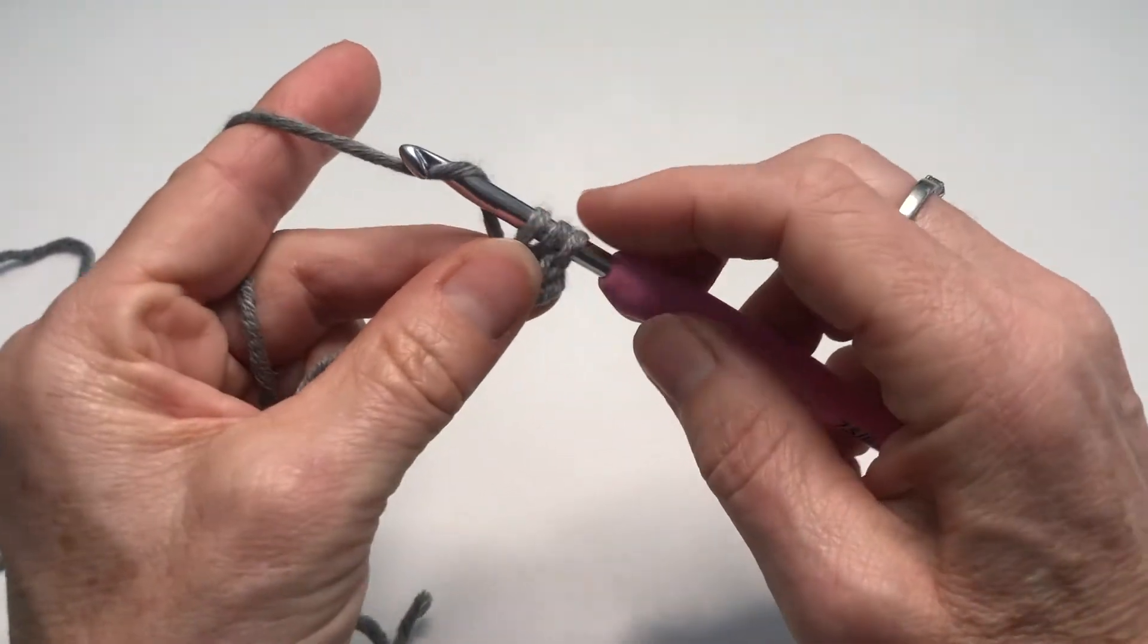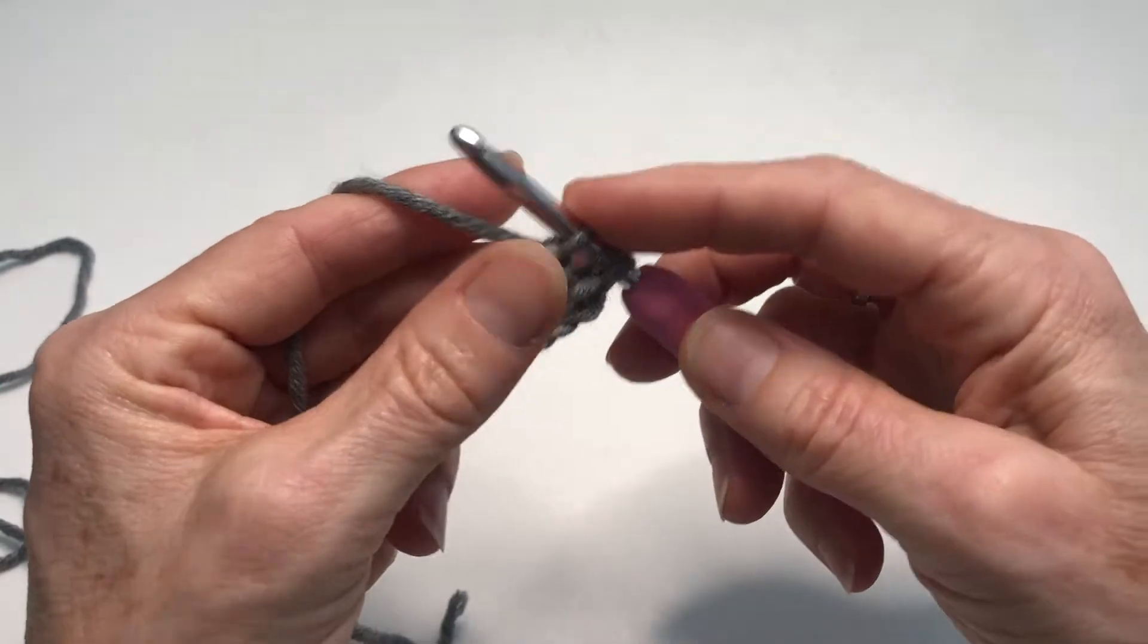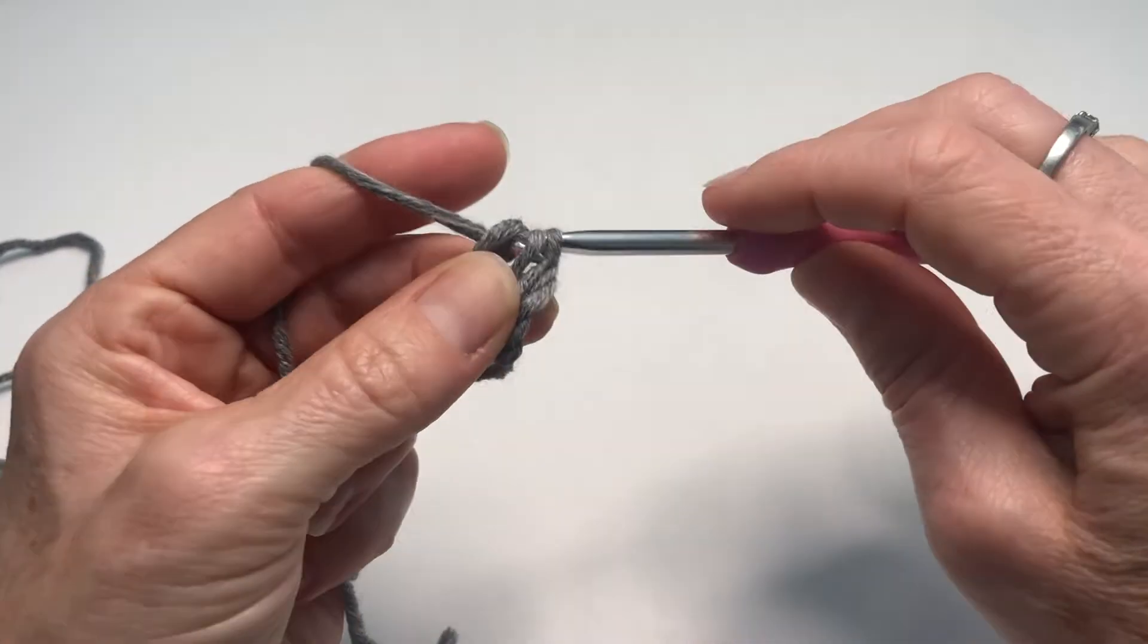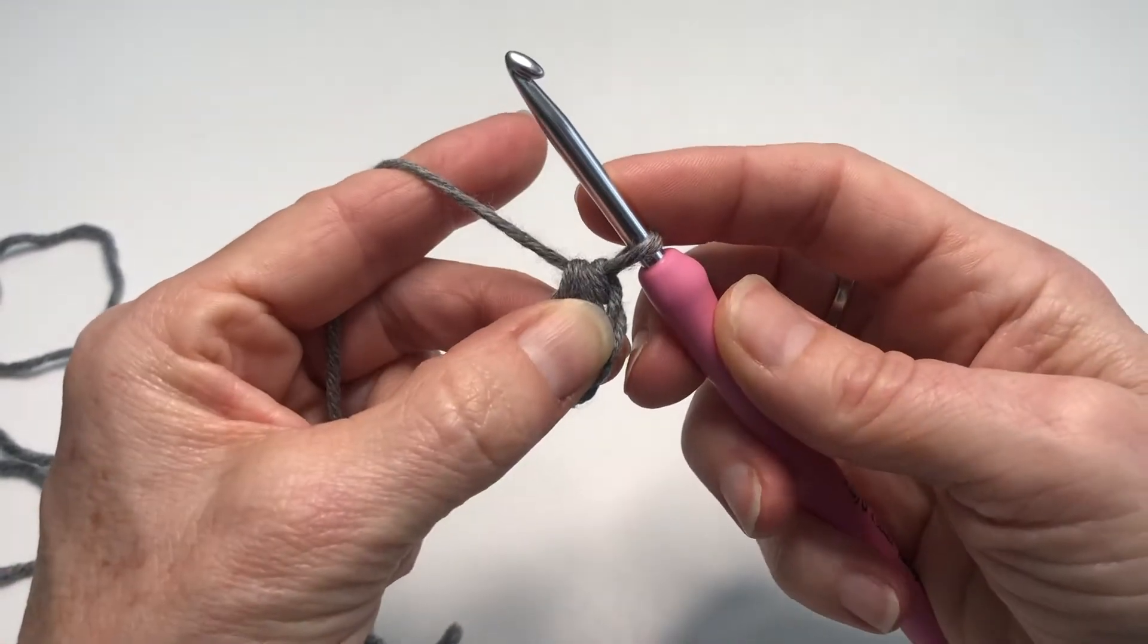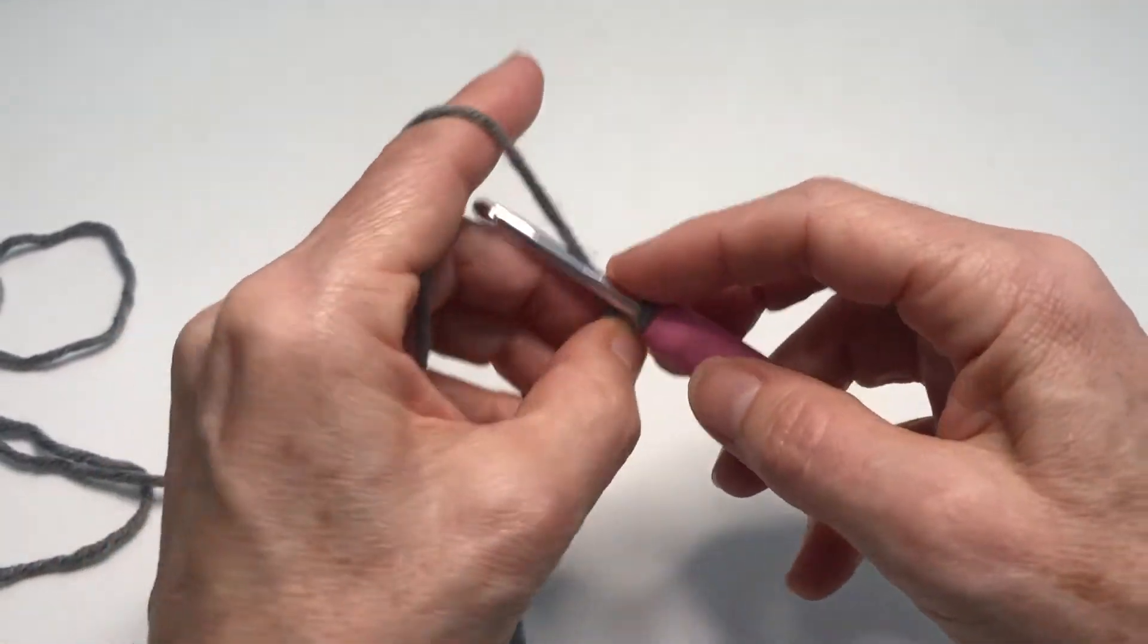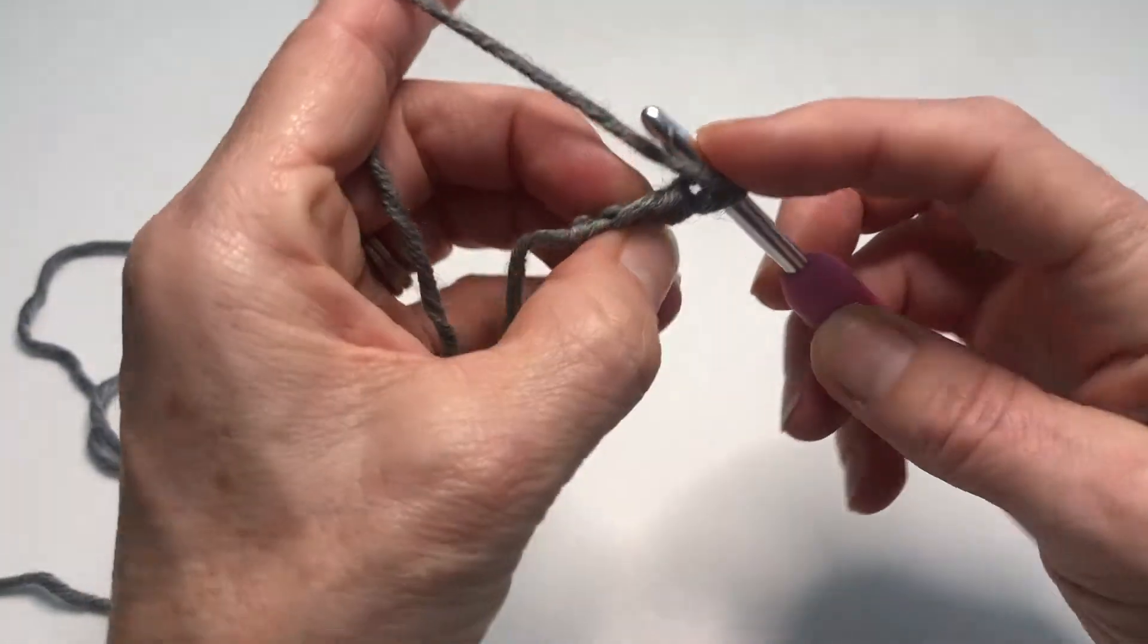the hook. We first need to make our chain, that's the one, and then we make our half treble, which is yarn over and pull through the whole stitch. Tighten that up and we repeat. Yarn over, find the V.